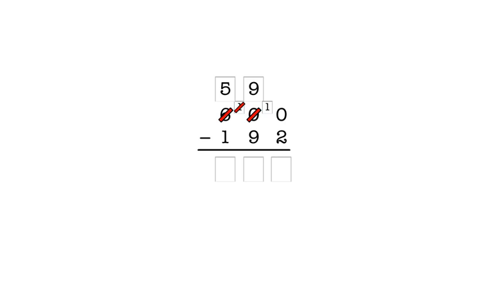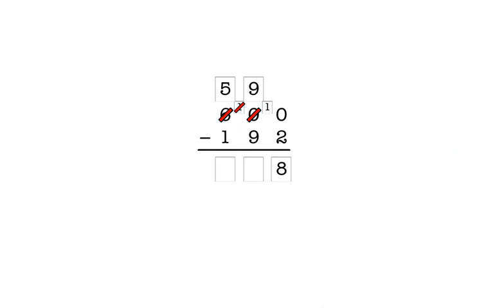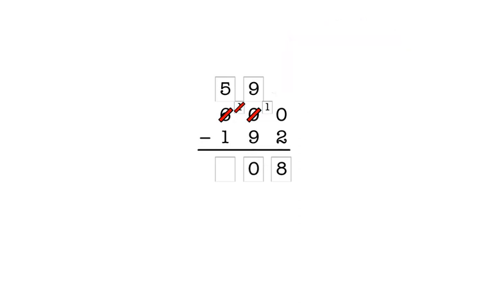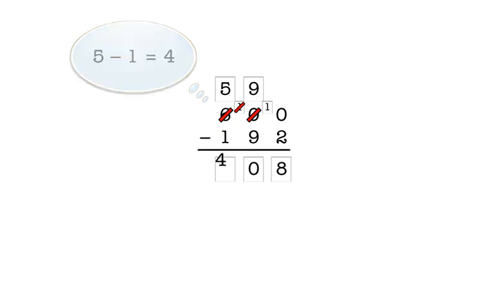Now we can subtract. In the ones column, we have ten minus two, which is eight. So, we enter eight here. In the tens column, we have nine minus nine, which is zero. So, we enter zero in the answer box for the tens column. In the hundreds column, we have five minus one, which is four. So, we enter four in the answer box for the hundreds column. Our final answer is four hundred eight.